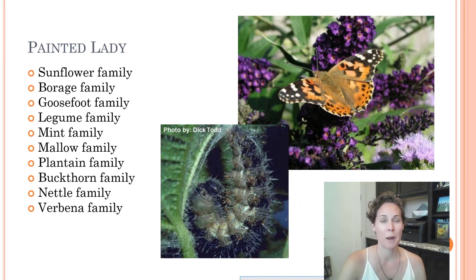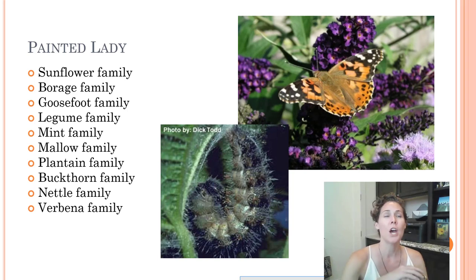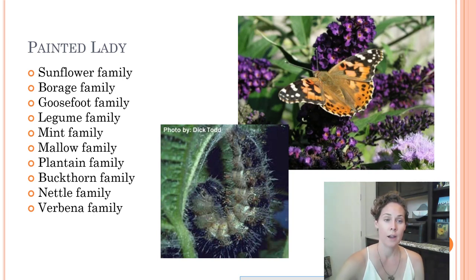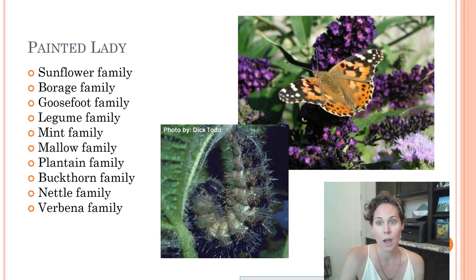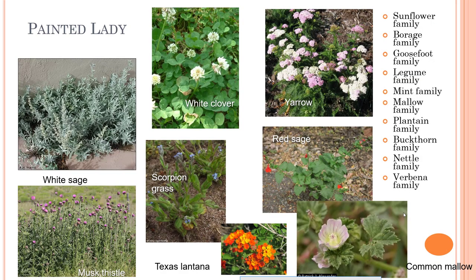Painted ladies are probably the most common butterflies you can get your hands on if you've looked into raising butterflies. One of the reasons is because they have a huge list of plants they will utilize as a host, so they're very easy to raise and found everywhere all over the United States. They're a cosmopolitan brush-footed butterfly. They like things in the sunflower family, legumes, mints, mallows, plantains, buckthorns, nettles, and verbena — a huge long host range. Some examples include yarrow, white clover, red sage, common mallow, Texas lantana, white sage, and musk thistle.